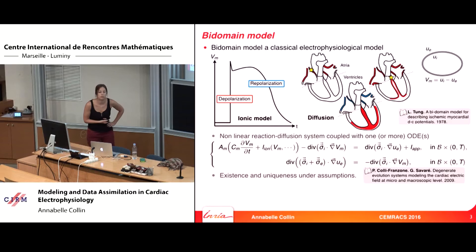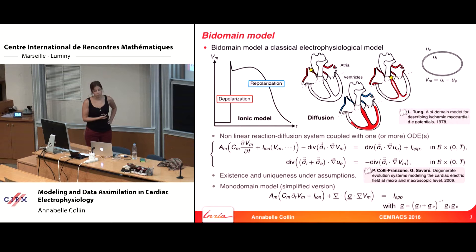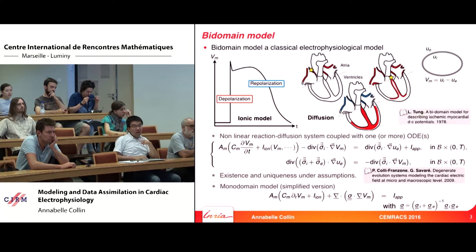There is existence and uniqueness of this model under some assumptions, in particular assumptions on the nonlinear terms. There is also a simplified version called the monodomain model, which applies when the intracellular tensor and the extracellular tensor are collinear. With these equations, you just solve for V_m, the transmembrane potential.